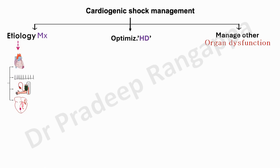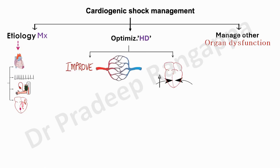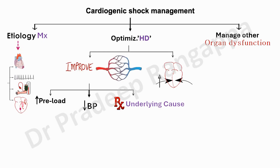For intensivists, optimizing hemodynamics is key. There are two broad categories: improving perfusion and improving cardiac contractility. To improve perfusion, address preload in three ways. If preload is low, give small aliquots of fluid. In cardiogenic shock, preload is generally assumed to be higher, so assess volume status and give diuretics if needed.